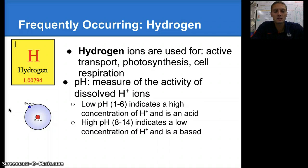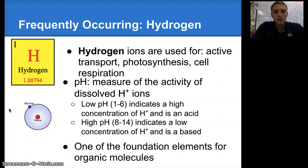A great example of this is actually in the ocean. Seawater is usually around a pH of 8.2 to 8.3, and so if that pH gets too high or too low, it can cause problems for the marine organisms. Hydrogen is also one of the foundation elements for organic molecules.